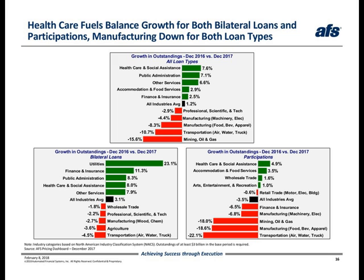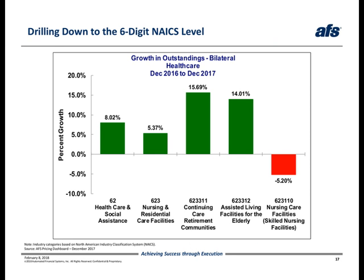A few slides ago, we saw the granularity that the AFS pricing dashboard provides users when looking at trends across the country, with insight down to the CBSA level. Our pricing dashboard also lets you examine trends within industries, all the way down to a six-digit NAICS code. On slide 17, we see that within healthcare, nursing and residential care facilities had a positive impact on loan growth. Drilling further down to the six-digit NAICS level, we see that two subsectors were responsible for the growth seen during 2017: continuing care retirement communities and assisted living facilities, while balances decreased in the nursing care facilities subsector. This granularity is something for you to consider when you need very detailed data to support your pricing decisions.